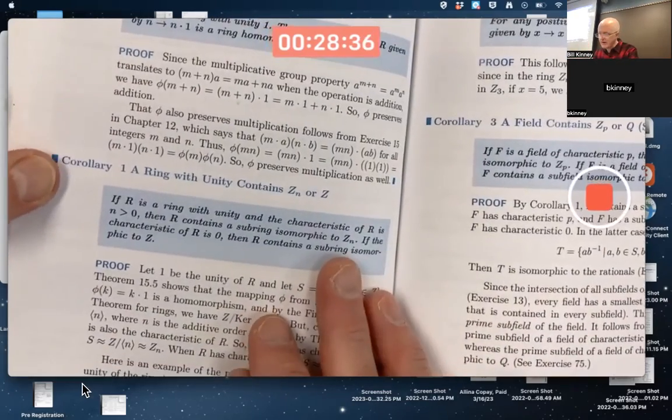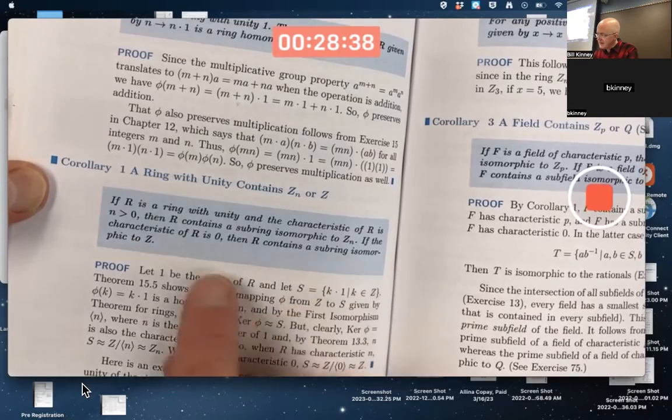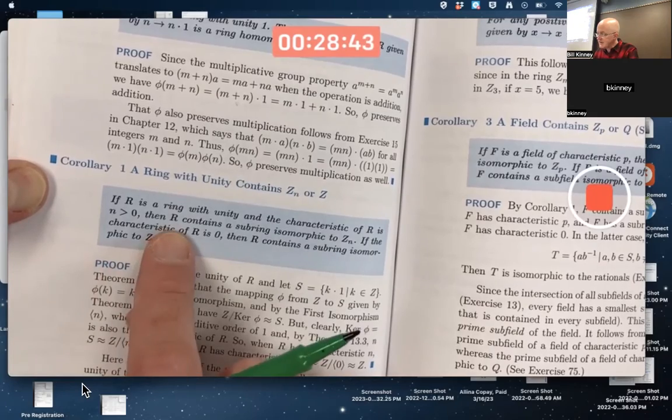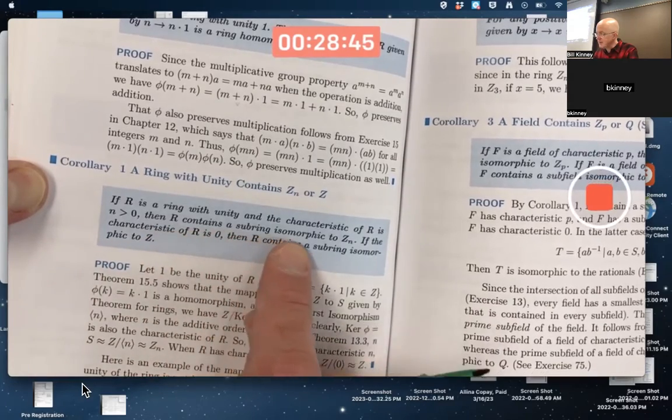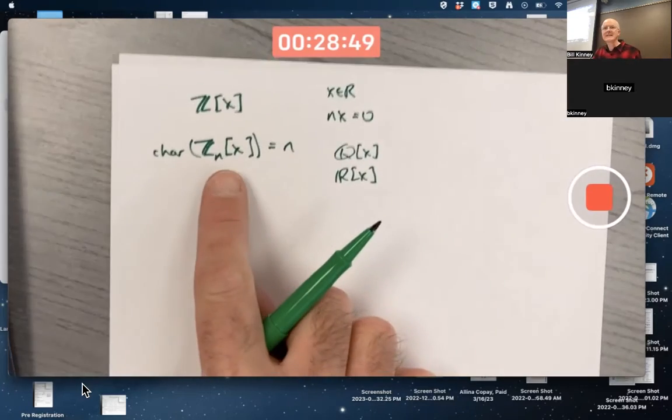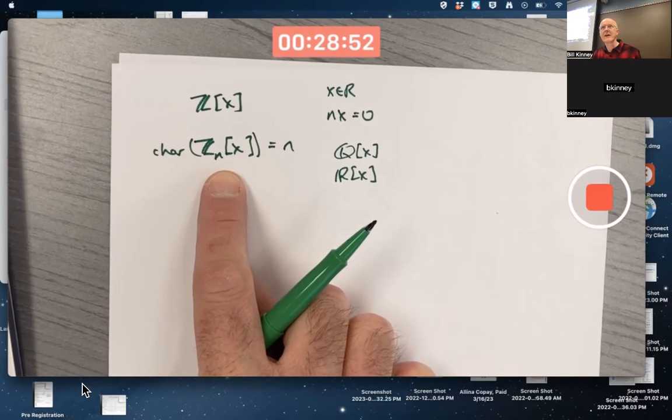But we're about to see that rational functions can form a field. Anyway, reemphasizing this corollary. If the characteristic of R is zero, then R contains a subring isomorphic to Z. If the characteristic of R is N, then R contains a subring isomorphic to Z_N. That contains a subring isomorphic to Z_N. The constant polynomials in there.